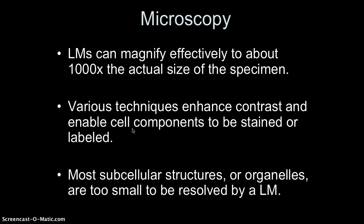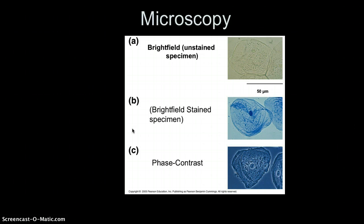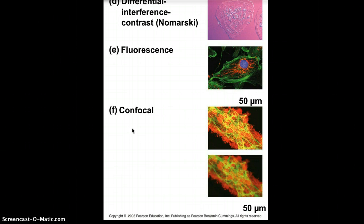Light microscopes can magnify effectively to about 1,000 times the actual size of the specimen. Various techniques can be used to enhance contrast and enable cell components to be stained or labeled, but most subcellular structures or organelles are too small to be resolved by a light microscope. Techniques include bright field unstained versus stained specimens, phase contrasting, differential interference contrast, fluorescent microscopy, and confocal contrast.